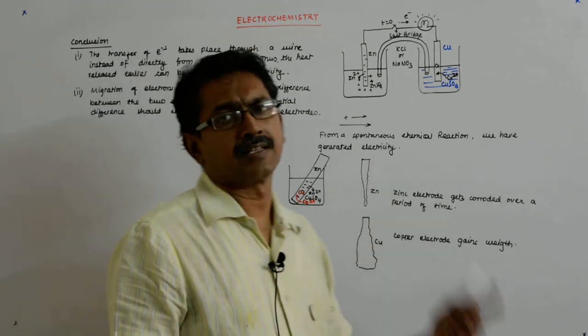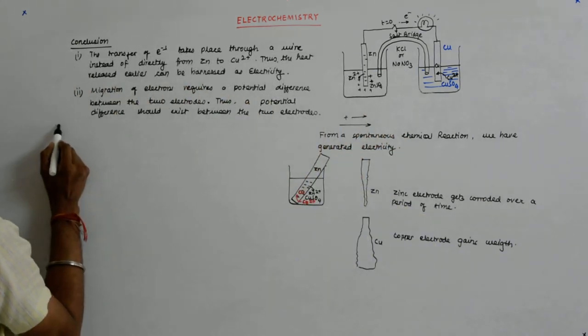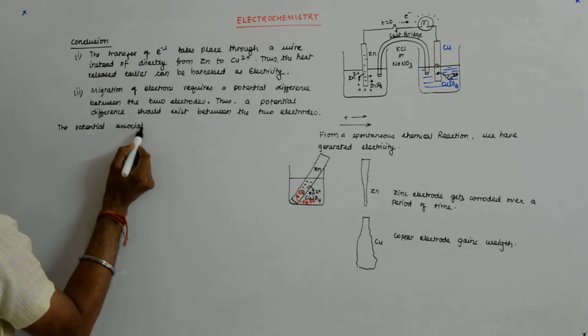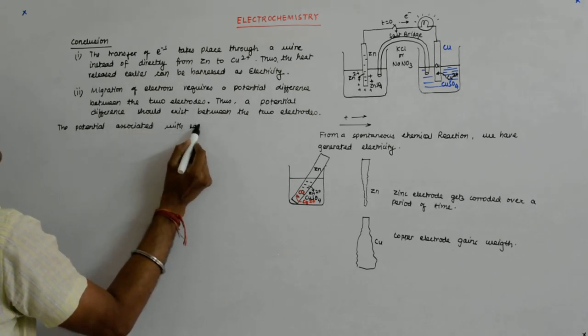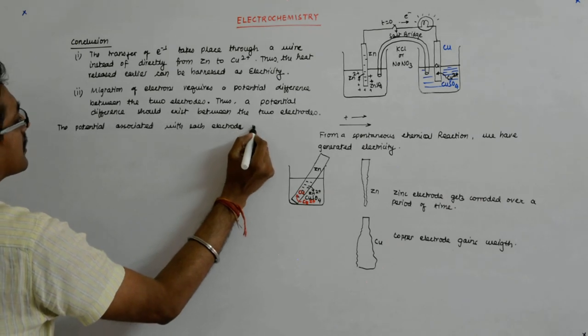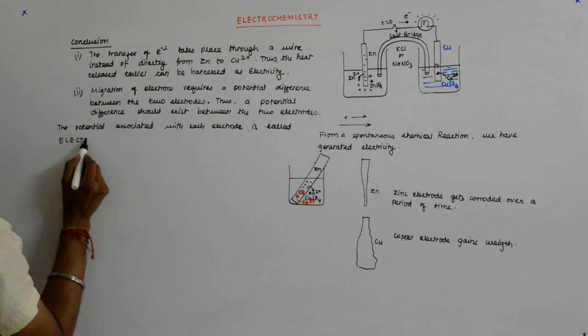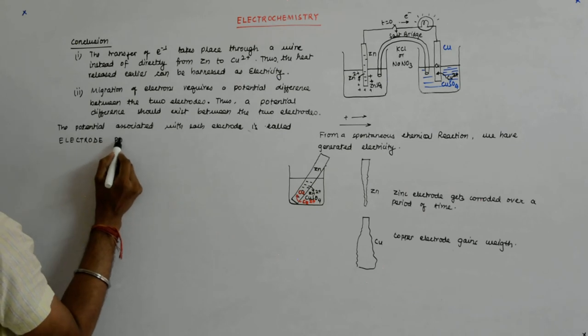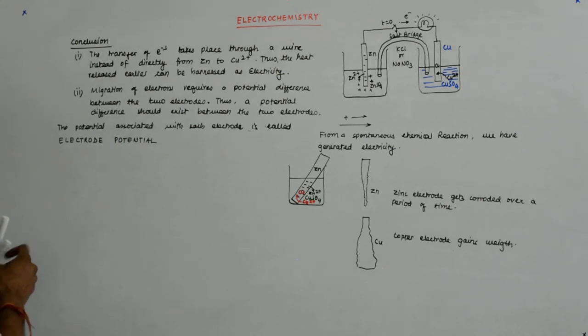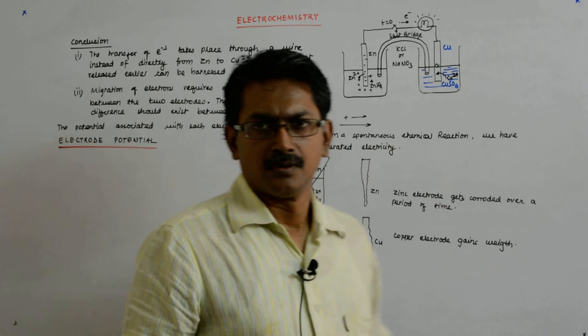Now, the potential that is associated with each electrode is known as electrode potential. The potential associated with each electrode is called electrode potential.